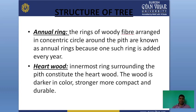Annual rings are rings of woody fiber arranged in concentric circles around the pith. They are known as annual rings because one such ring is added every year. The annual ring defines the tree's age — every year a new ring is added. Heartwood: the innermost rings surrounding the pith constitute the heartwood. This wood is darker in color, stronger, more compact, and durable.